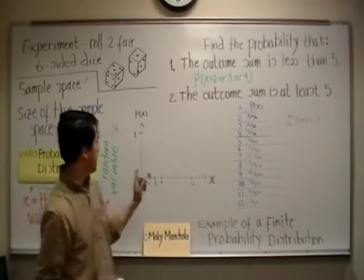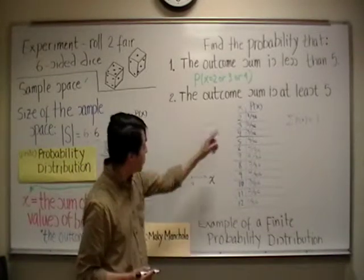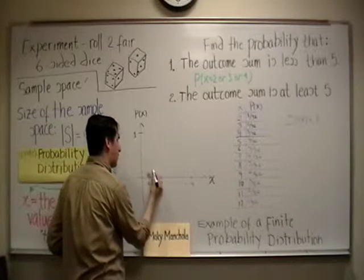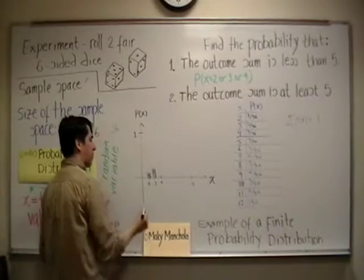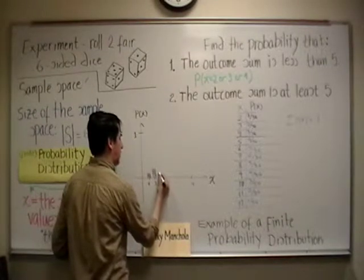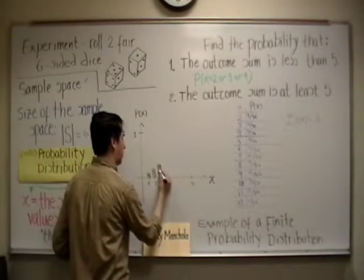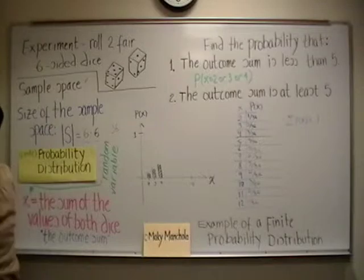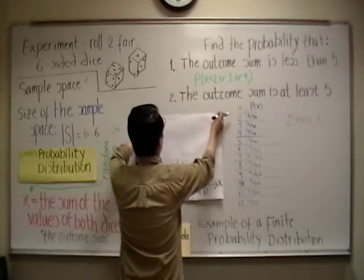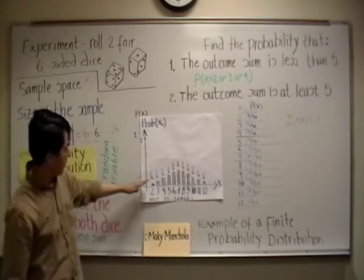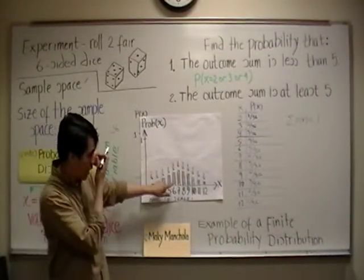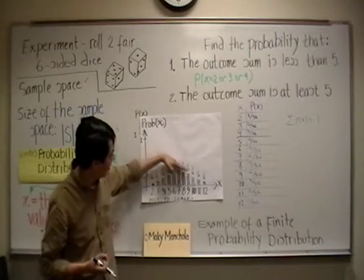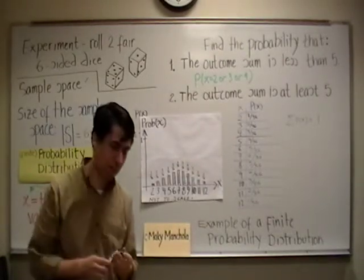Leaving the fractions unreduced makes this a very convenient task, since each bar increases by 1/36 over the previous one. When the histogram is completed, it has a triangular shape, peaking at X=7 with a probability of 6/36, and then returning back down to 1/36 in increments of 1/36.